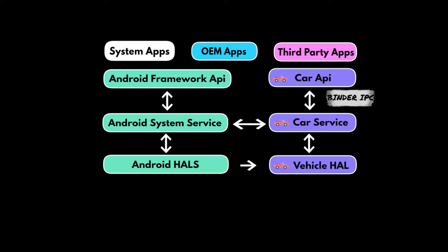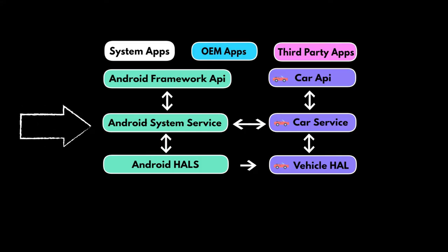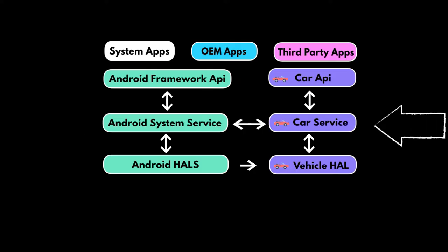The car API communicates with the car service over the binder IPC. This is because the car API and car service are in different processes. By default, Android does not allow one process to communicate directly with another process. Binder IPC is the inter-process communication mechanism used in Android. As we can see, the Android system services and the car service are on the same stack.